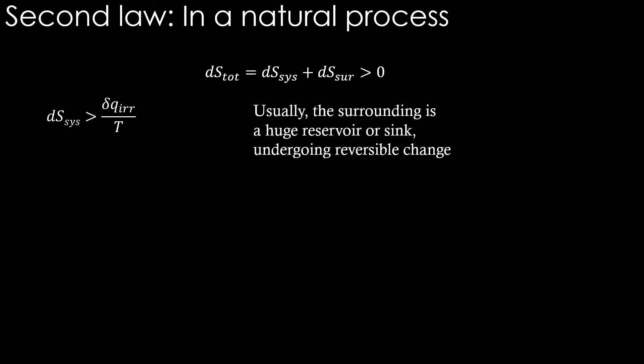For a natural process, we can write dS_total is equal to dS_system plus dS_surrounding which is greater than zero. So, let's say in this process heat q_irreversible is transferred from the surrounding to the system. dS_system is greater than del q_irreversible divided by T. The surrounding can be considered as a large reservoir. So the heat q_irreversible is removed from the surrounding in a reversible manner. So, dS_surrounding is equal to minus del q_irreversible divided by T. Now, for the system, we can rearrange the equation like this.